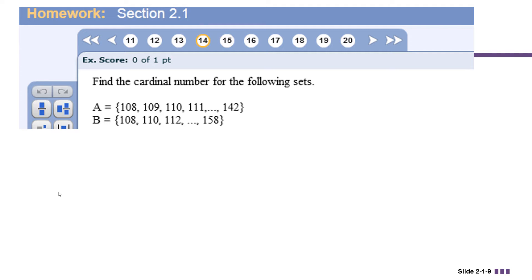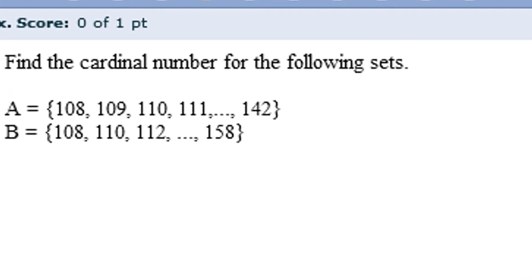So now let's take a look at an example from our MyLabs homework, which is the online homework website that goes with our Mathematical Ideas 14th edition textbook. In this example, we're asked to find the cardinal number for the following sets. A is the set 108, 109, 110, 111, all the way up to 142. And B is the set 108, 110, 112, all the way up to 158.